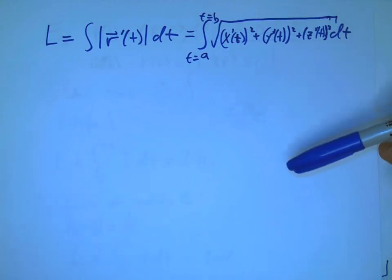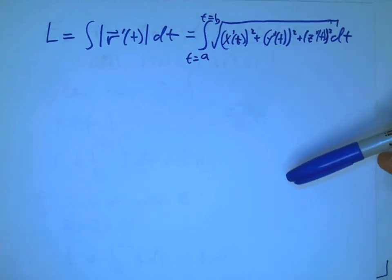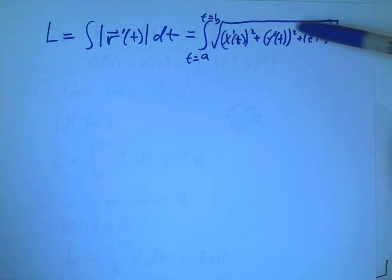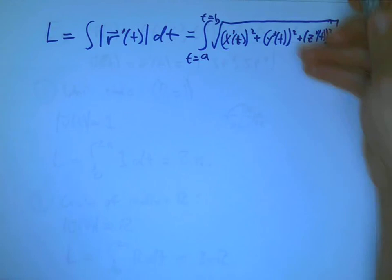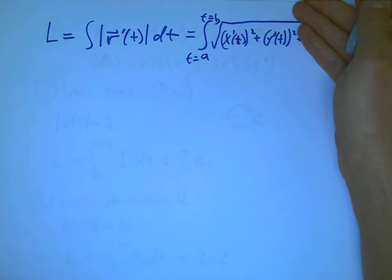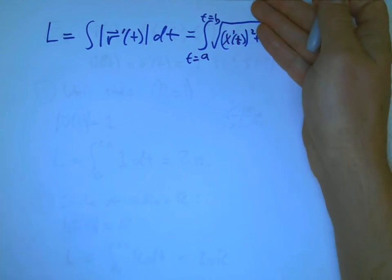That's going to be the integral of the magnitude of the velocity dt. The velocity is the magnitude, is the derivative of position. And if I want it out in terms of x, y, and z, then it's going to be x prime squared, y prime squared, z prime squared.